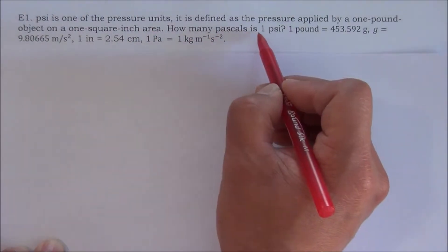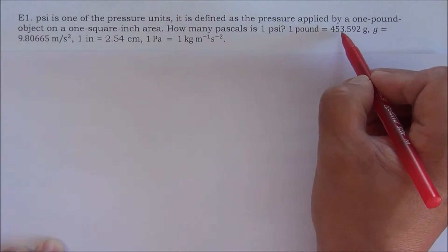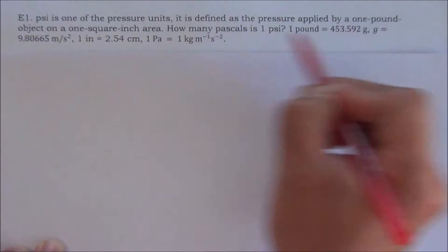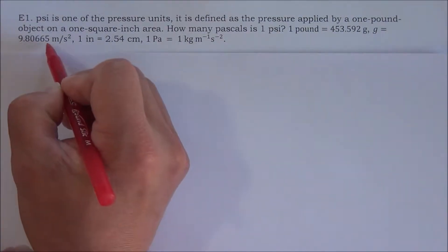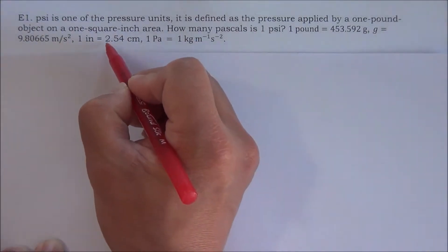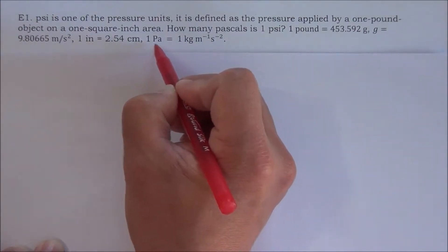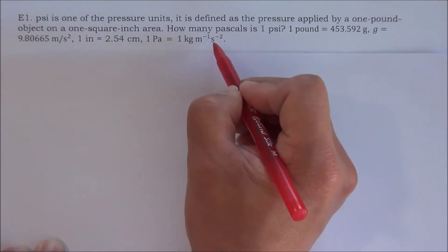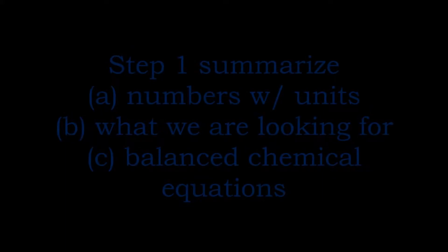How many Pa is 1 psi? We are given: one pound equals 453.592 grams, g equals 9.80665 meters per second squared, one inch equals 2.54 centimeters, and one Pa equals one kilogram per meter per second squared.